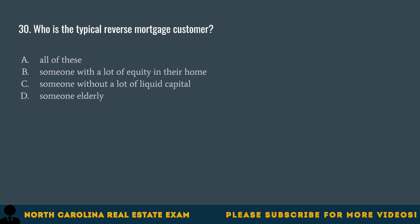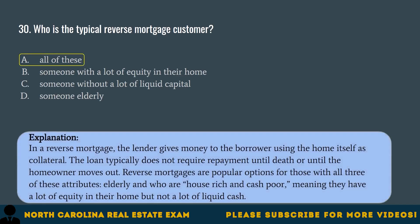Question 30. Who is the typical reverse mortgage customer? A. All of these. B. Someone with a lot of equity in their home. C. Someone without a lot of liquid capital. D. Someone elderly. The correct answer is A. All of these. In a reverse mortgage, the lender gives money to the borrower using the home itself as collateral. The loan typically does not require repayment until death or until the homeowner moves out. Reverse mortgages are popular options for those who are elderly and house rich and cash poor — meaning they have a lot of equity in their home but not a lot of liquid cash.